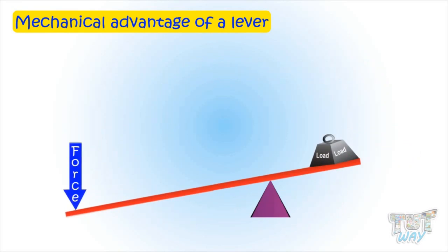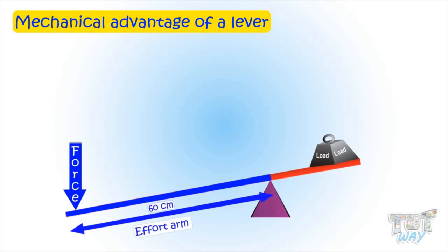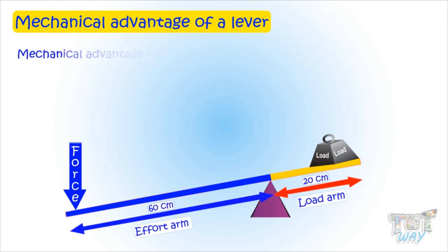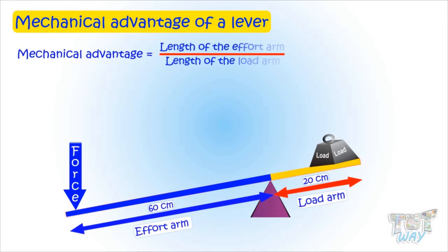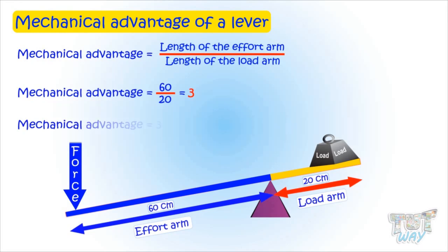Here is another example. The length of the effort side is 60 centimeters and the length of the load side is 20 centimeters. The mechanical advantage is the length of the effort arm divided by the length of the load arm, so it will be 60 divided by 20. That is 3, so the mechanical advantage in this case is 3.